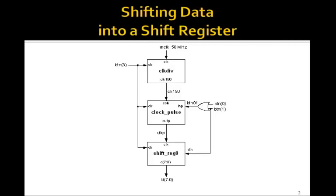Now, we're going to do a little trick here. We're going to use button 0 and button 1 to shift either a 0 or a 1 into this shift register. We're going to use ClockDiv and ClockPulse that we've seen before. And look at this OR gate. We're going to OR button 0 and button 1, which means button 01 will go high if you press either button 0 or button 1.